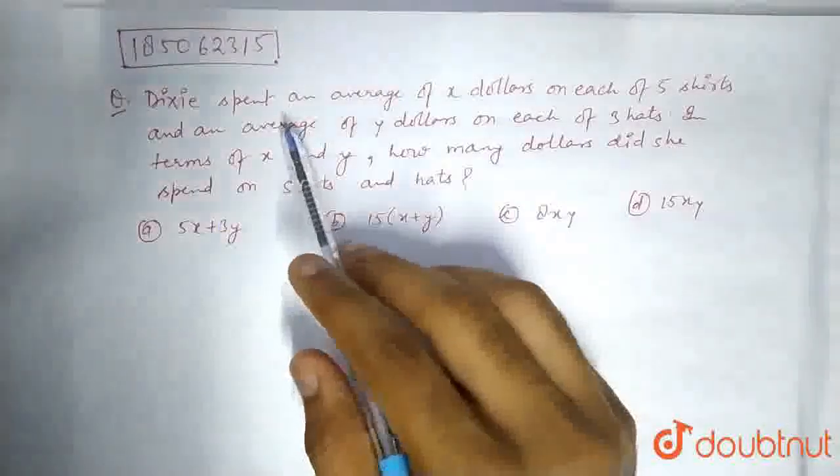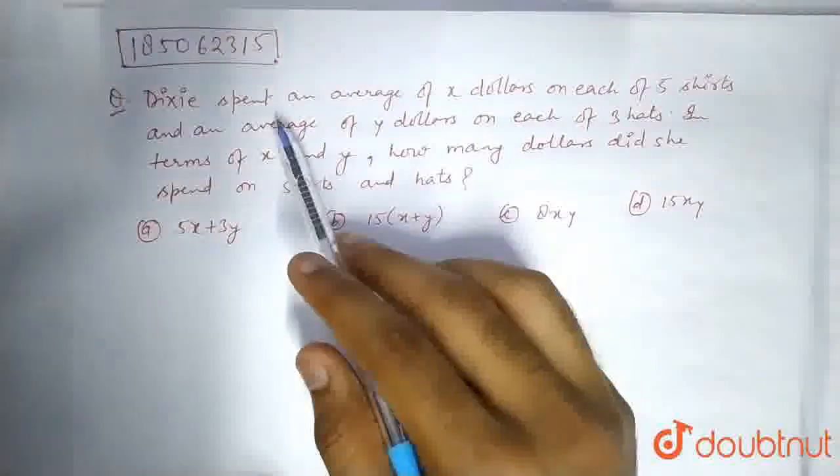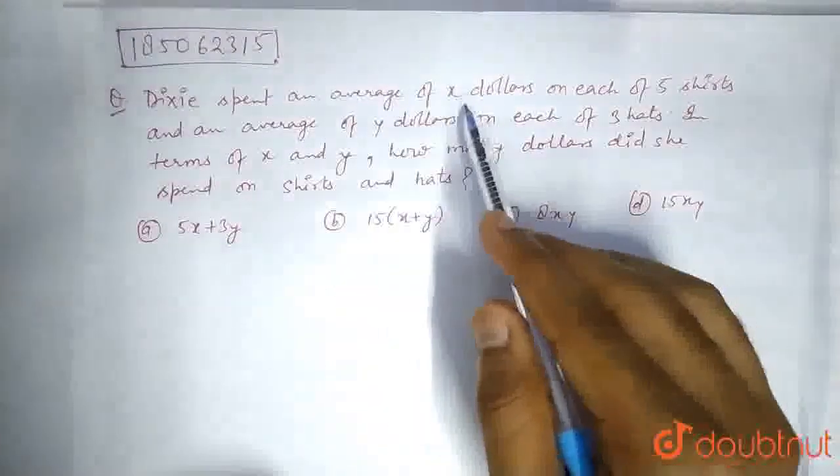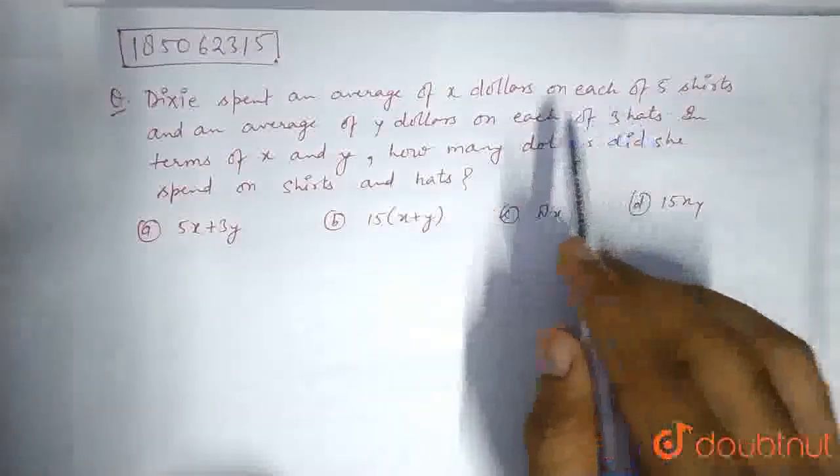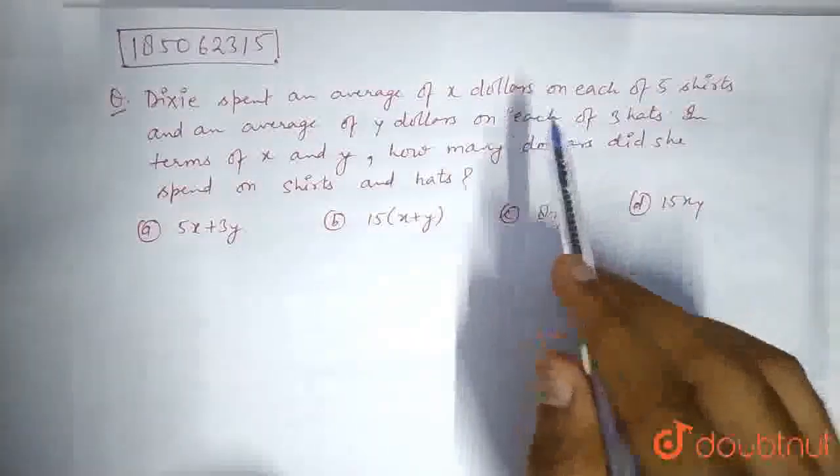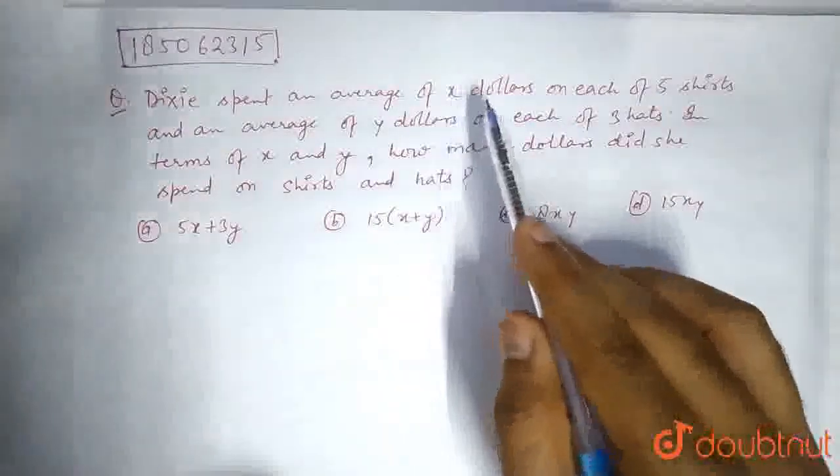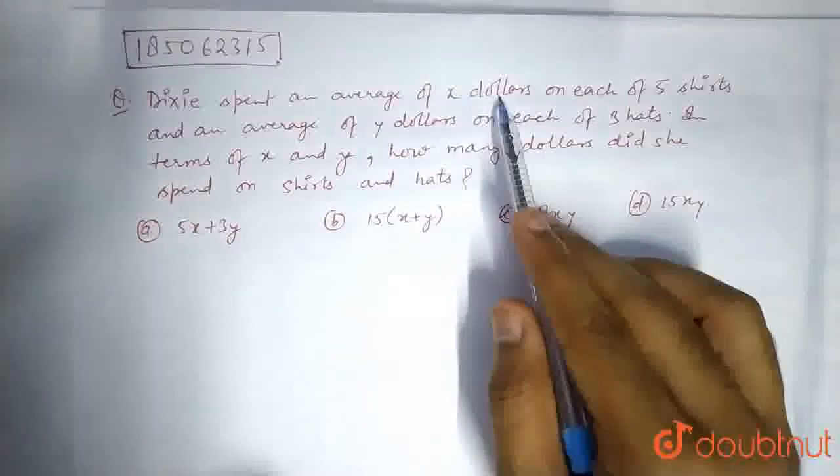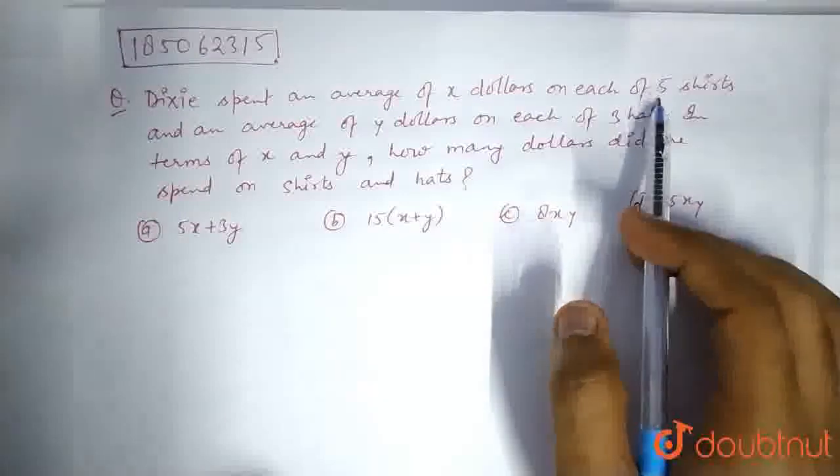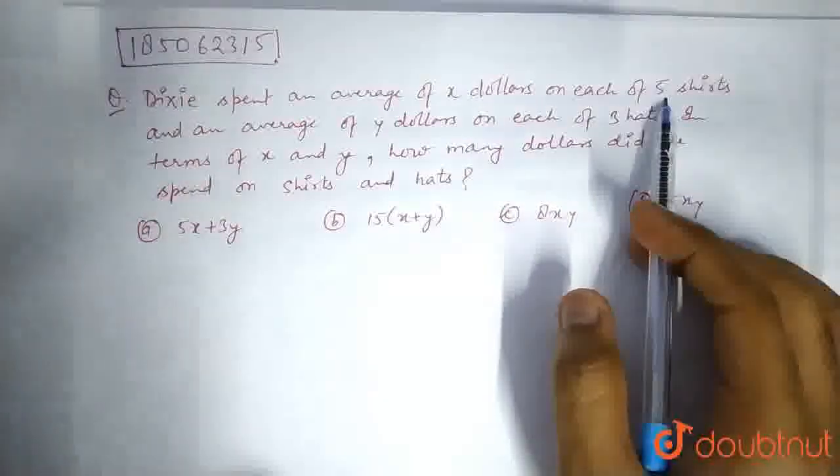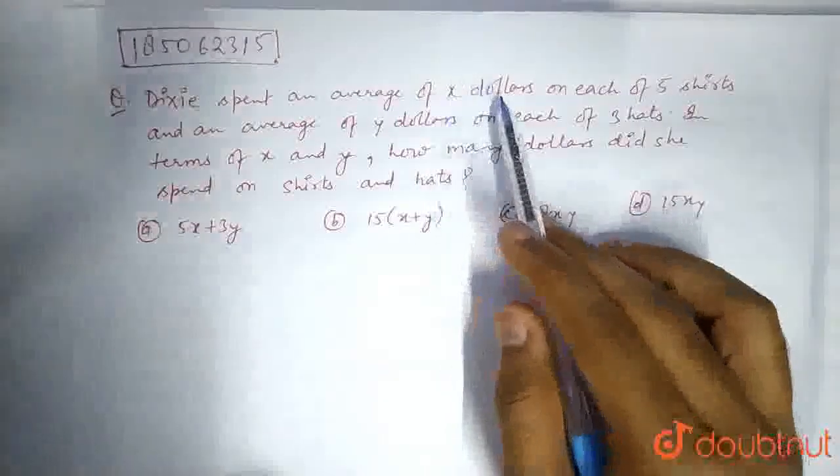The question says that Dixie spent an average of X dollars on each of 5 shirts and an average of Y dollars on each of 3 hats. That means she is actually buying 5 shirts, paying X dollars each.